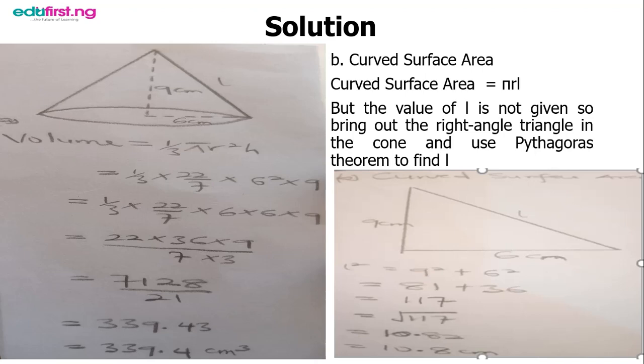Based on the equation they gave us, I have drawn a cone here, and the values given are placed appropriately. We have height 9 centimeters, and the base radius is 6 centimeters.